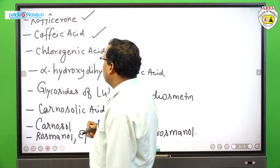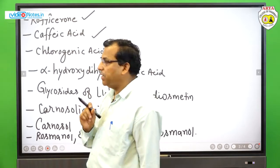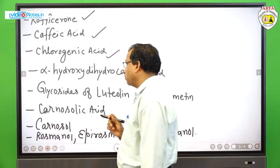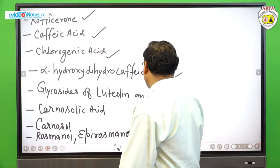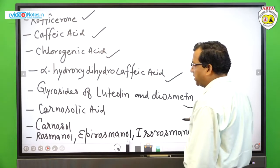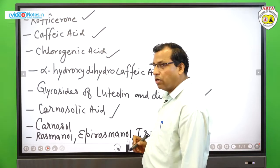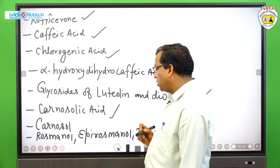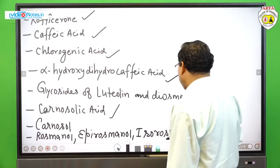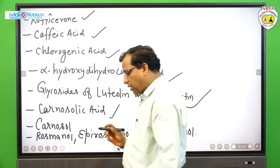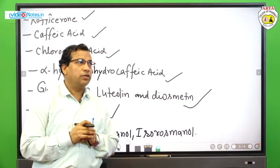Also present are camphic acid, chlorogenic acid (in minute quantities), alpha-hydroxy-dihydrocamphic acid, glycosides of luteolin and diosmetin, carnosolic acid, carnosol, rosmanol, apirosmanol, and isorosmanol — also present in trace amounts in rosemary oil.